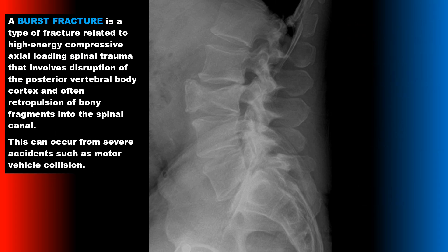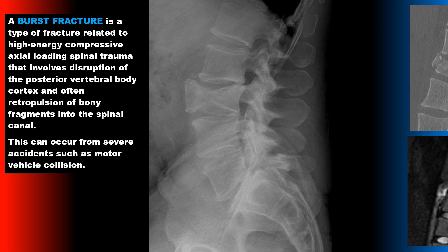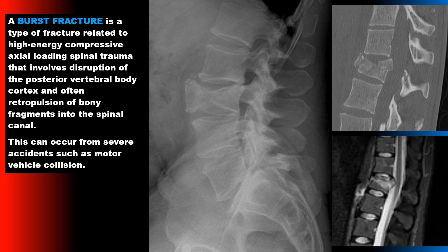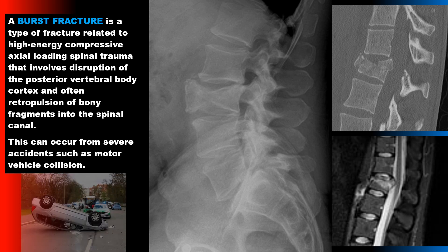A burst fracture is related to high-energy compressive axial loading spinal trauma that involves a disruption of the posterior vertebral body cortex and often retropulsion of bony fragments into the spinal canal. This can occur from severe accidents such as a motor vehicle collision.